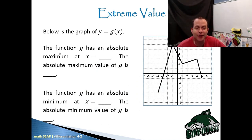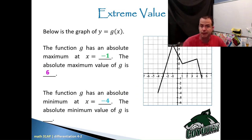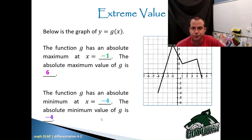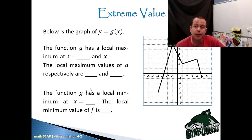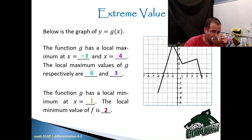The function g has an absolute max at x equals negative 1, and the absolute maximum value of g is 6. The function g has an absolute minimum at x equals negative 4 — because it's absolute, I don't need to be on both sides. The absolute minimum of g is negative 4. The function g has a local maximum at x equals negative 1 and x equals 4, with local maximum values of 6 and 3 respectively. The function g has a local minimum at x equals 1, and the local minimum value is 2.